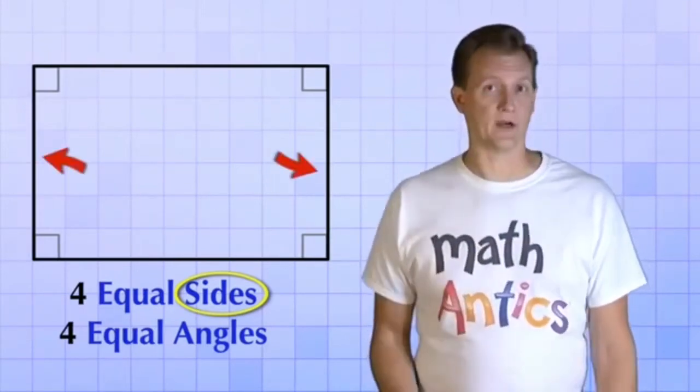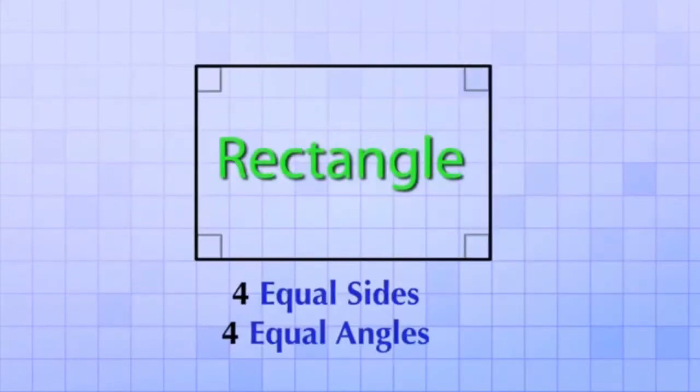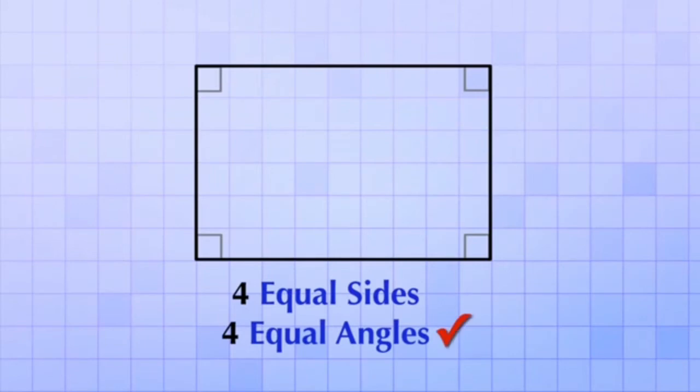Let's stretch our square in one direction so that one pair of sides is now longer than the other pair. This is what we call a rectangle. A rectangle is a quadrilateral that still has four equal angles. Notice that when we stretch the square, the angles didn't change at all, but it does not have four equal sides. Again, notice that just like a square, a rectangle is made from two pairs of parallel sides.